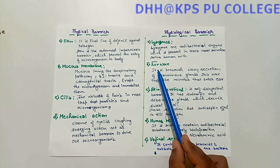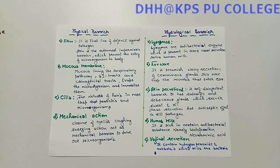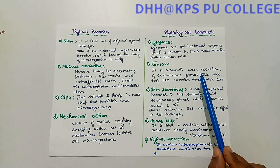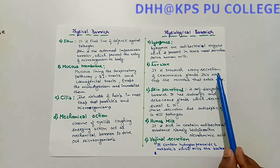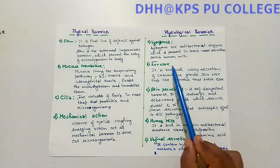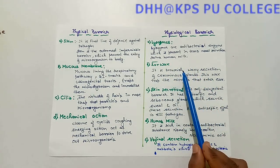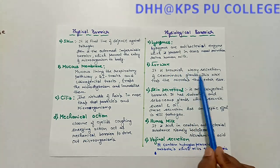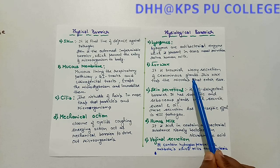The next physiological barrier is earwax. Earwax is a brownish waxy secretion produced by the ceruminous glands of the ear canal. These earwax secretions kill pathogens that enter the ears.